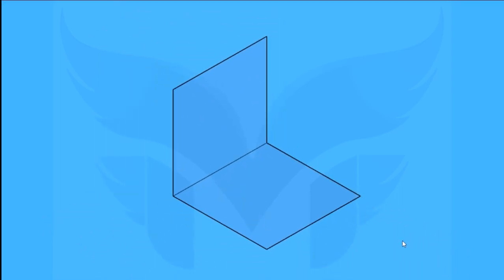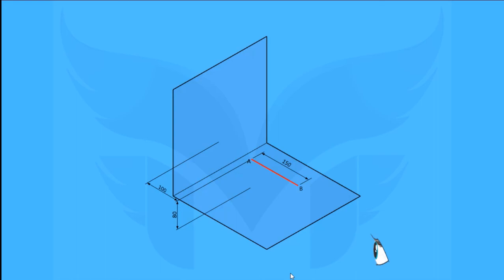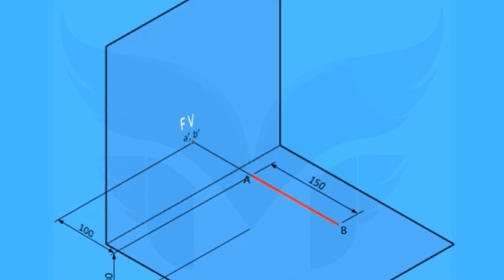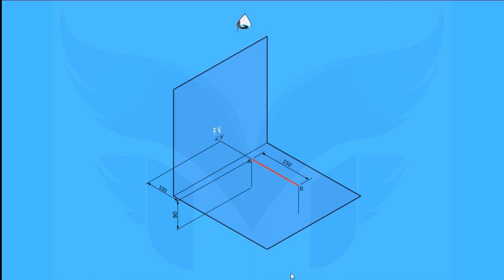In the next example, the line is perpendicular to the VP and parallel to the HP. Line AB is 150 mm long. Both ends A and B are 80 mm above the HP, and end A is 100 mm in front of the VP. When we see the line from the front, it appears as a point. We take a common projector for both ends and name the front view as a', b'. Now looking from the top, take projectors from A and B, name the points small a and b, connect them, and we have a top view appearing in a true length.